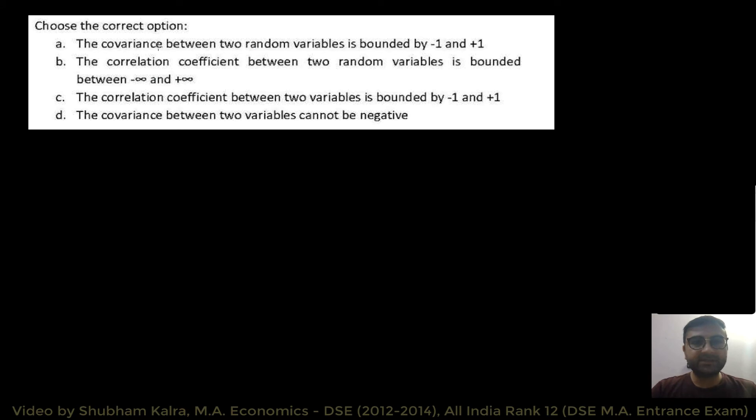Okay, let's move to the next question. So, this question in this question, we have to choose the correct option in this question. And, it is a very straightforward question. Part number A, covariance between two random variables is bounded by minus 1 and plus 1. This is wrong. Part number B, correlation coefficient between two random variables is bounded between this. This is wrong. Actually, correlation coefficient is bounded by minus 1 and 1. So, this is the right answer. Part number D, covariance between two variables is bounded by minus 1 and plus 1. So, this is the right answer. Part number D, the covariance between two variables cannot be negative. Again, this is wrong. Jo covariance hota hai doh variables ki beech mein, woh negative ho sakta hai. So, A is wrong. B is wrong. D is wrong. C is your right answer. So, let's move to the next question now.